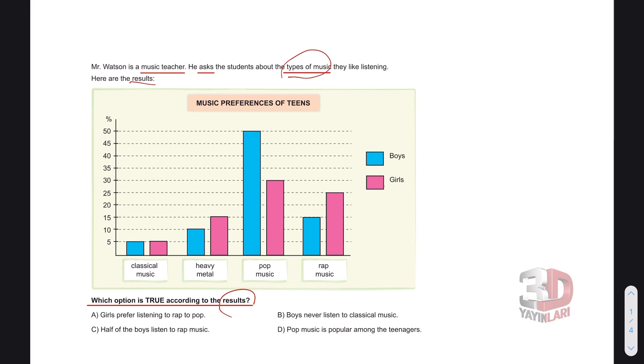Girls prefer listening to rap to pop. Kızlar rap müziği dinlemeyi tercih ediyorlar pop müziğin yerine. Let's look. Rap is 25 and pop is 30. This is false. Option B: Boys never listen to classical music. Let's see. Boys are blue. Five boys listen to classical music. This is false.